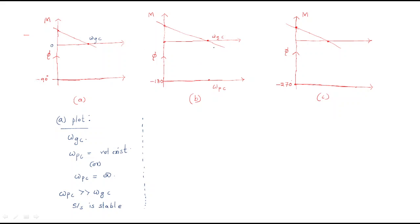For plot B, wherever the magnitude touches zero that is the gain crossover frequency. In the phase plot, the phase is always minus 180 degrees. Since the phase is always minus 180, both the gain crossover frequency and the phase crossover frequency have the same value, so the system is marginally stable.